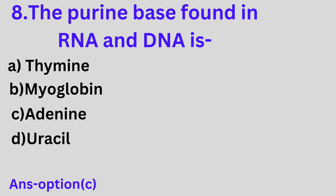Question 8: The purine base found in RNA and DNA is A. Thymine, B. Myoglobin, C. Adenine, D. Uracil. Option C is the correct answer. The purine base found in RNA and DNA is adenine.